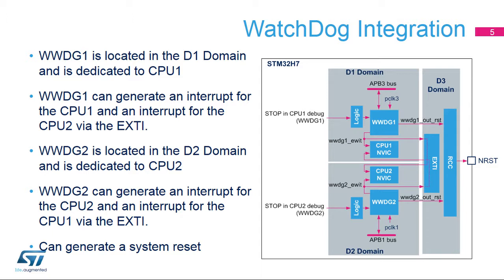In the same way, the WWDG2 early interrupt output is connected to the NVIC of CPU2, but also to the EXTI in order to wake up and interrupt CPU1 if the application requires such a feature. For each window watchdog, it is possible to select if the watchdog will freeze when the associated CPU is in debug or core-halted mode. Please refer to the Microcontroller Debug Unit (DBGMCU) description for details. The window watchdogs are frozen when the system is in stop or standby mode, but can remain active when the corresponding CPU is in sleep mode. Both watchdogs have the capability to perform a system reset handled by the RCC block.